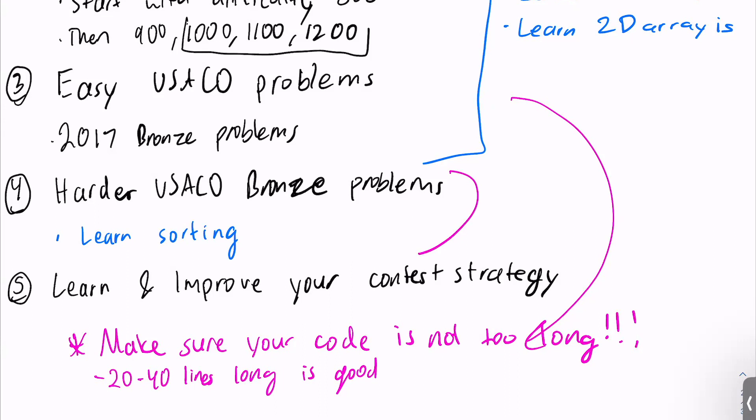Because when we come to these harder bronze problems here, you will not be able to do them if your shorter bronze problems are too long. If these easier problems are 200 plus lines, then how long are these long problems going to be? They're going to be 300 plus lines, 500 plus lines. Like, I've seen really long codes here. And so you cannot, cannot, cannot let these things get too long. Okay. So if you're good to go with these codes being short, you should also be good to go here. And then learn and improve your contest strategy. And I'm not going to really go super into detail in this video. Just because this video is how to get started with coding, and this is all the way at the end of bronze. But I will link it in the description below, and it should be in that corner.